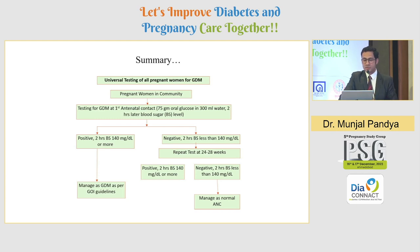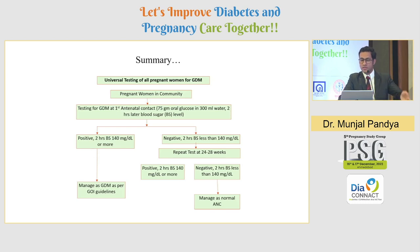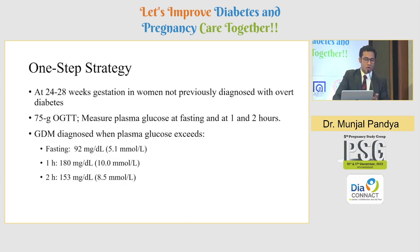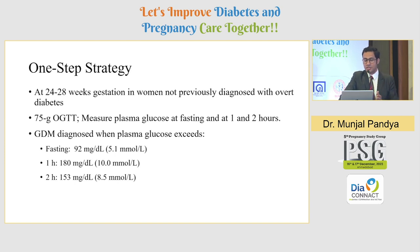To summarize the testing algorithm: at the first antenatal visit, go for FBS or RBS; if normal, perform 75-gram OGTT. If positive, manage as GDM; if negative, repeat at 24 to 28 weeks. If positive at 24–28 weeks, treat as GDM; if negative, manage as normal antenatal care. The 24-to-28-week period is very crucial. If the patient has already been diagnosed with GDM, do not repeat OGTT between 24 to 28 weeks — doing so could result in intrauterine fetal death.